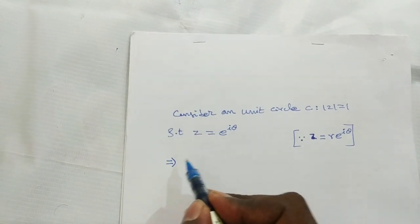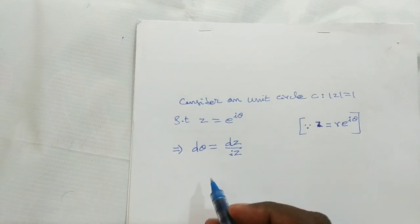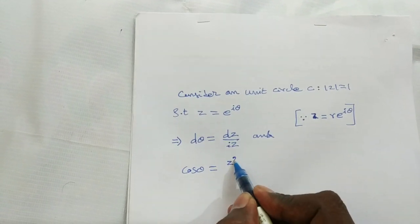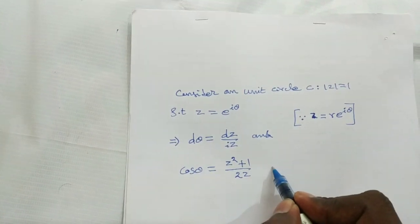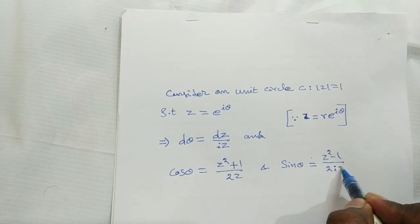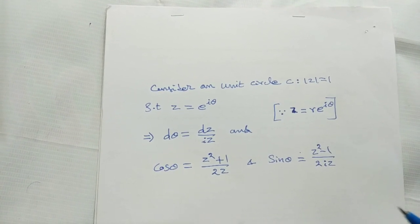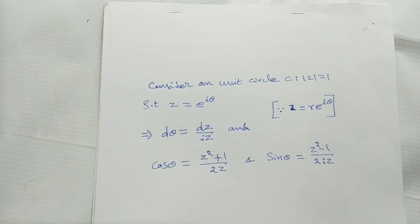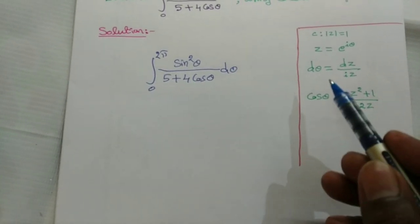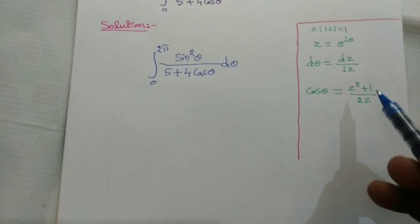From this, we can write dθ = dz/(iz). For proof of this, refer to the video on the definition and working rule for contour integrals — the link is available in the description box. So these are our substitutions: for dθ, substitute dz/(iz), and for cosθ, substitute (z² + 1)/(2z).